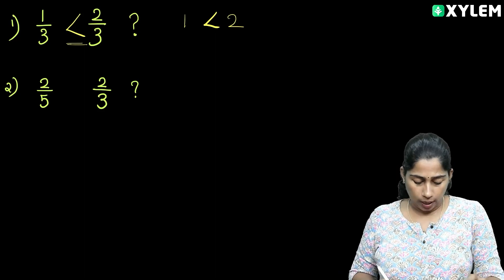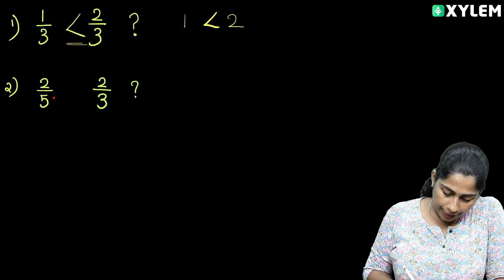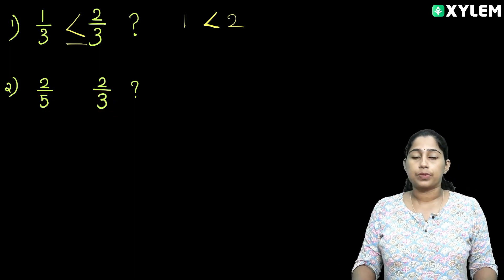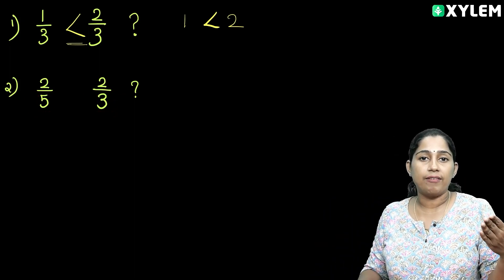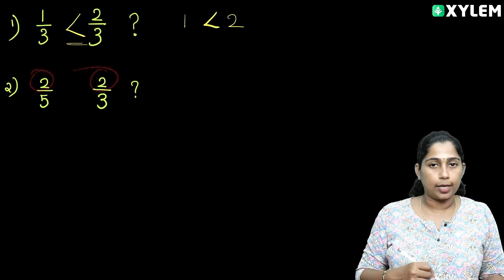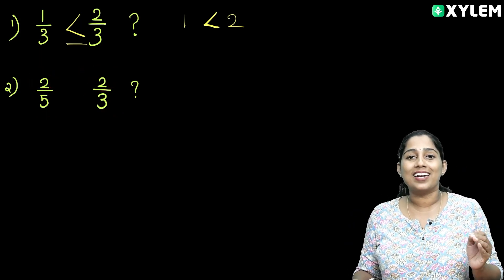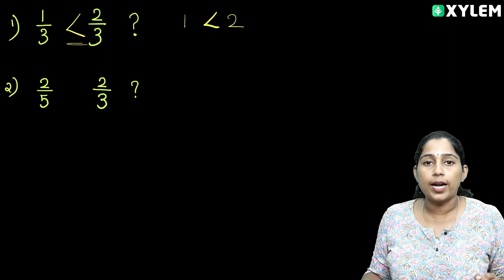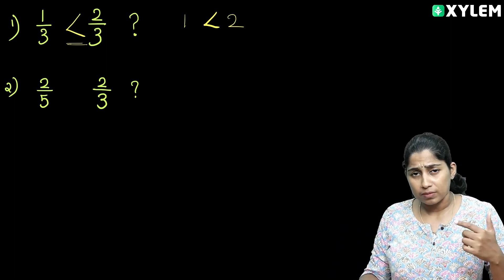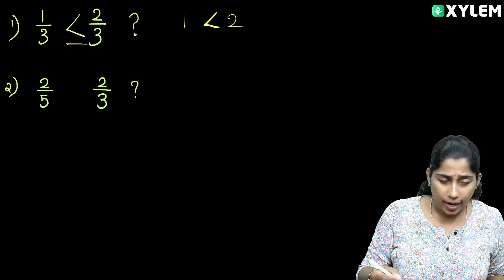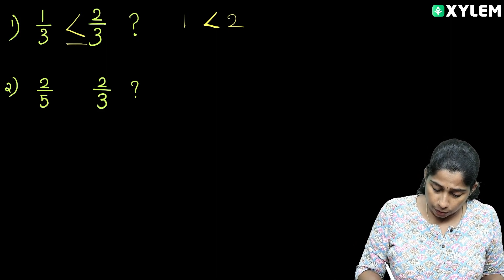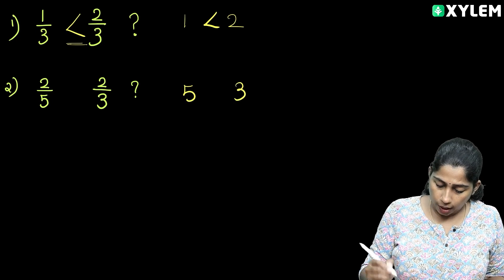This is the same number. In the next case, the two denominators are different. The denominators are different. We will check the numerator — the numerator is the same thing. What do you think? The numerator is the same. How do you deal with the denominator?